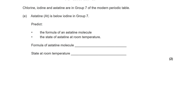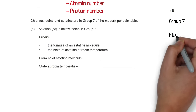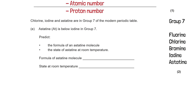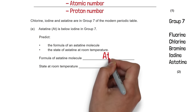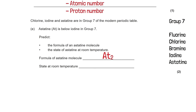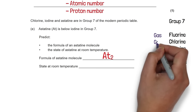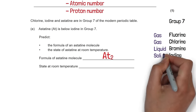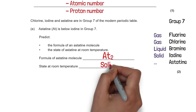The question is about astatine, which is below iodine in group 7. Group 7 goes: fluorine, chlorine, bromine, iodine, then astatine. We need to predict a formula for the astatine molecule. Group 7 elements are diatomic, so the formula is At₂. To predict the state at room temperature: fluorine and chlorine are gases, bromine is a liquid, iodine is a solid — so we predict astatine is probably a solid.